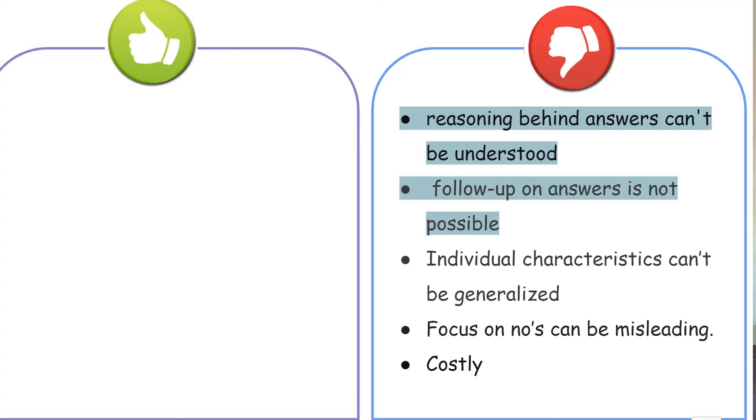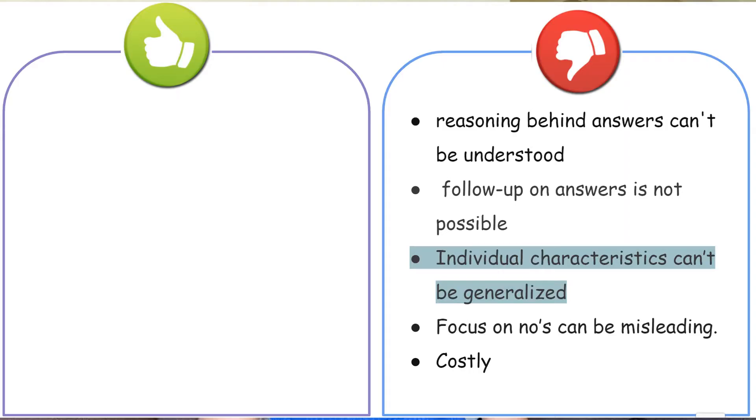Now let's discuss some of the cons of quantitative research. One of the biggest problems is that the reasoning behind the results and answers can't be questioned — you cannot follow up on answers once the survey is completed. Also, individual characteristics cannot be generalized.